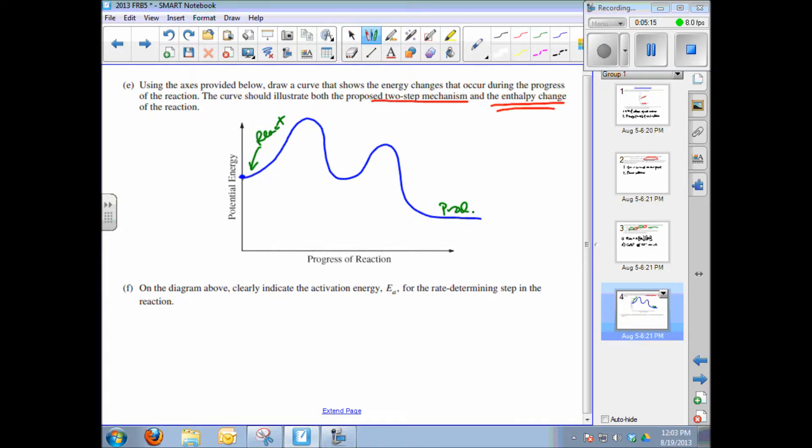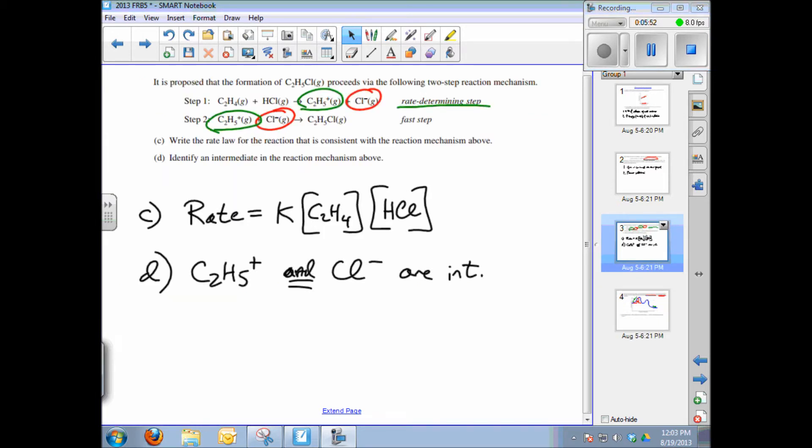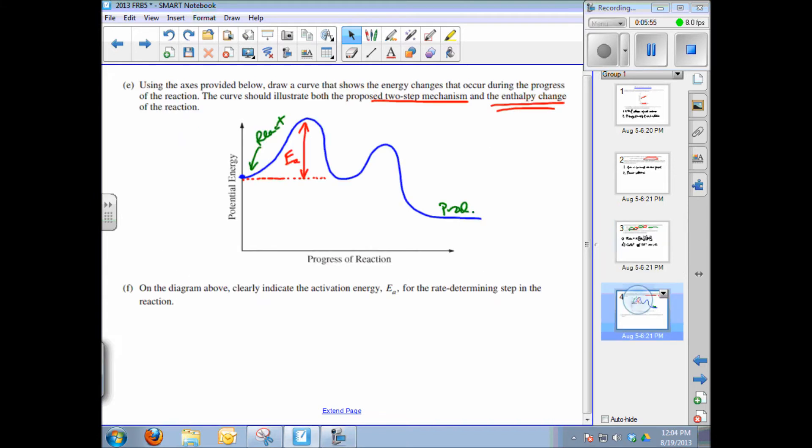The activation energy would be this amount of energy right here. So clearly indicate that that's the activation energy, E sub A. That's the energy needed to get the reaction to proceed. And there are two steps, so two energy barriers are indicated on the reaction diagram. But the very first one is the activation energy to get the reaction proceeding. Now that is the answer for question number five. Oh, hey, one other note. Notice on this reaction that the initial energy barrier for the first reaction shown here is higher. That means it will be slower. It is the rate determining step for a two-step reaction.